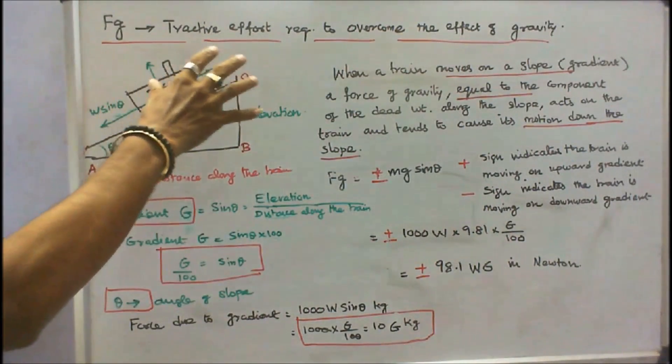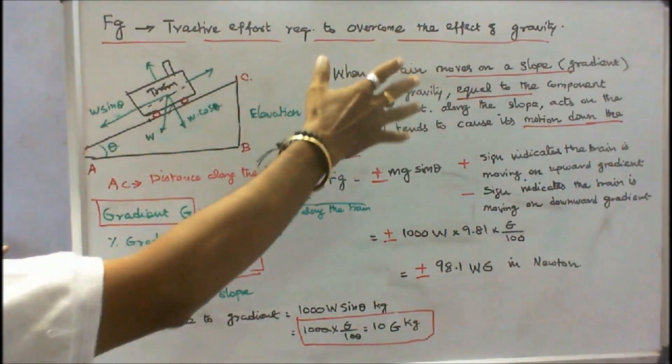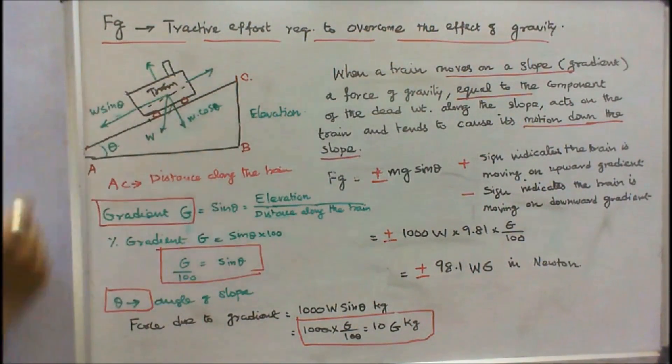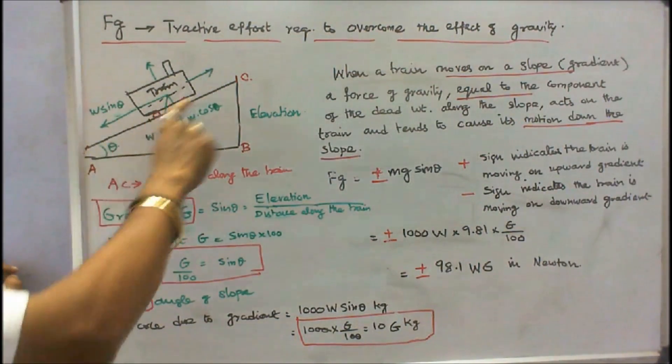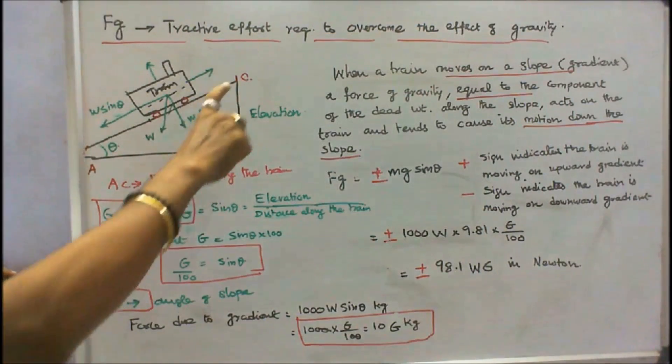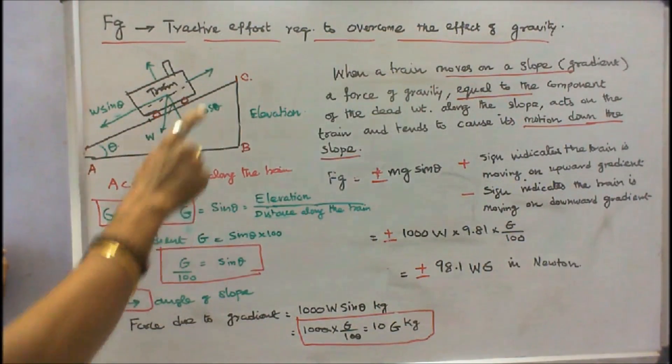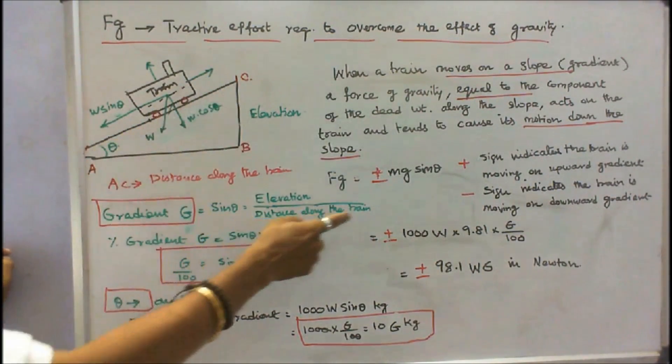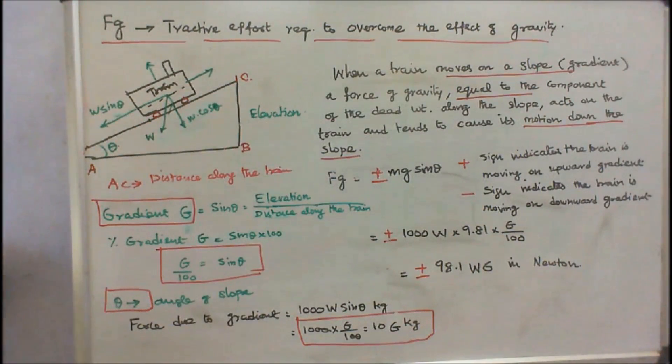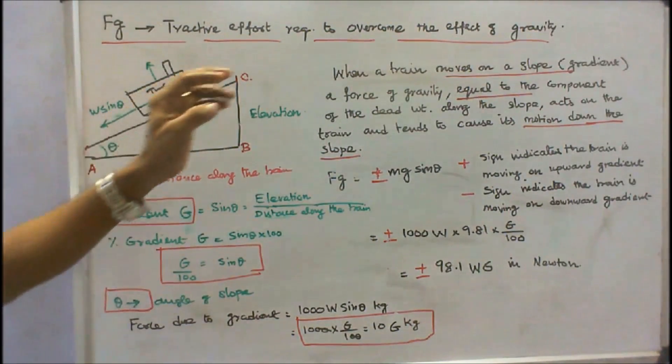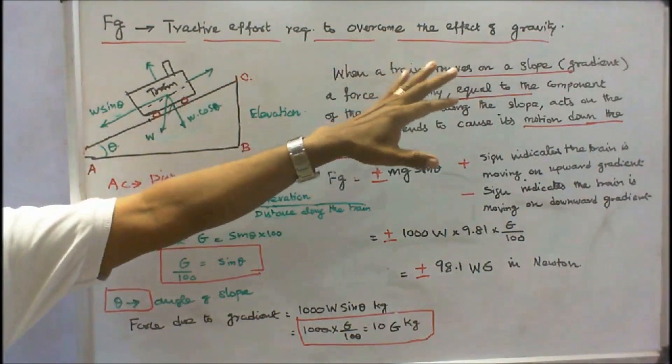The next is tractive effort required to overcome the effect of gravity. This is the train. AC is the distance along the train and BC is the elevation. Therefore gradient G is equal to elevation divided by distance along the train, that is equal to sin theta, where theta is the angle of slope. Percentage gradient G is equal to sin theta into 100. Therefore sin theta is equal to G by 100.